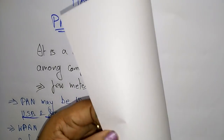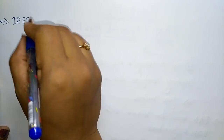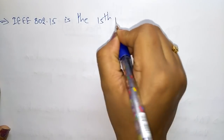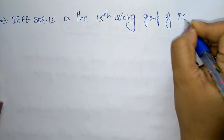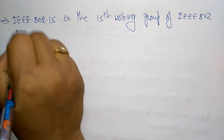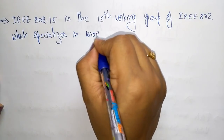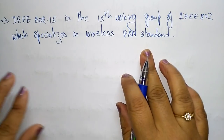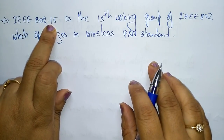The IEEE 802.15 standard covers wireless PAN technology. IEEE 802.15 is the 15th working group of the IEEE 802 standard, which specializes in wireless Personal Area Network standards. So when we refer to wireless PAN, the IEEE 802.15 standard applies, with '15' indicating the 15th group of the IEEE 802 standard.